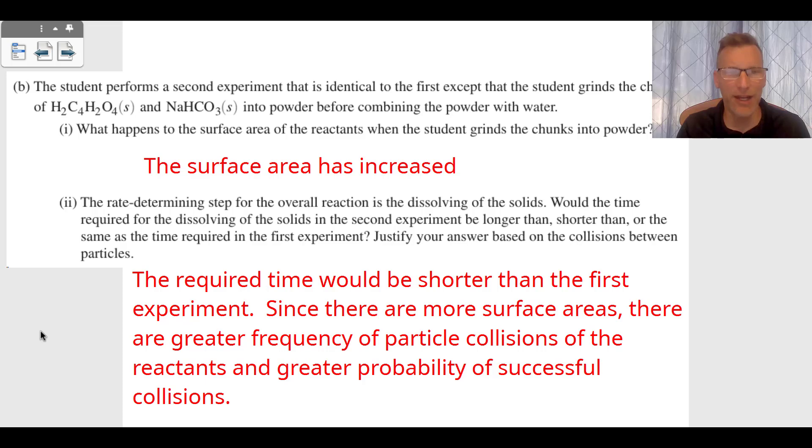Number two asks what happens to the time required to dissolve the solids compared to the first experiment, and we have to justify based on collisions. The required time would be shorter in the second experiment than the first since there are more surface areas, greater frequency of particle collisions of reactants, and greater probability of successful collisions. This will lower the reaction time and speed up the rate of the chemical reaction.